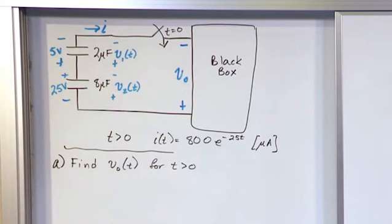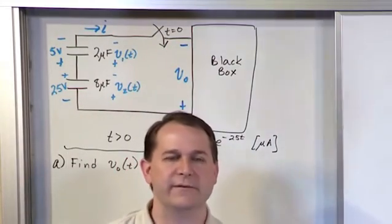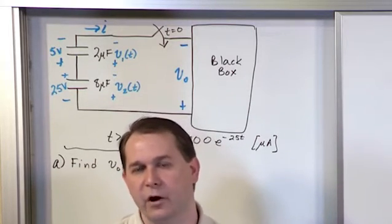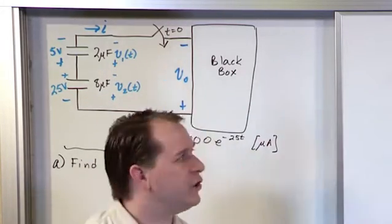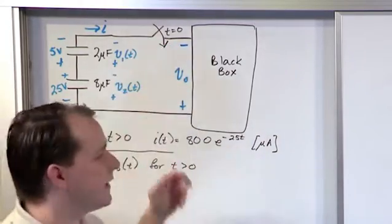Notice that V0 is defined to be negative to positive. This happens all the time in circuits - you'll be given a circuit, they'll draw the voltages everywhere, and you have to find out what the voltages are. If you don't know what's in the black box, you have no idea if the voltage is really negative to positive or positive to negative.